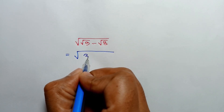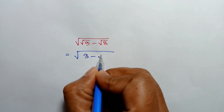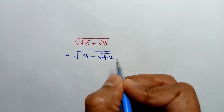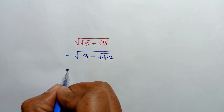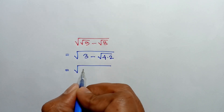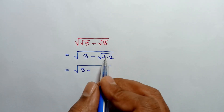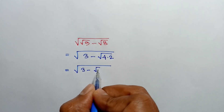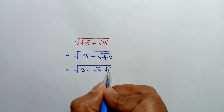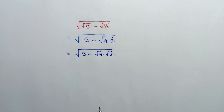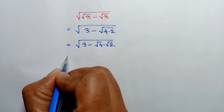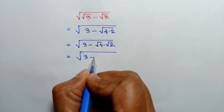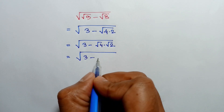Square root of 9 can be written as 3. Square root of 8 equals square root of 4 times 2. So the expression becomes square root of 3 minus square root of 4 times 2, which equals square root of 4 times square root of 2, and square root of 4 is 2.